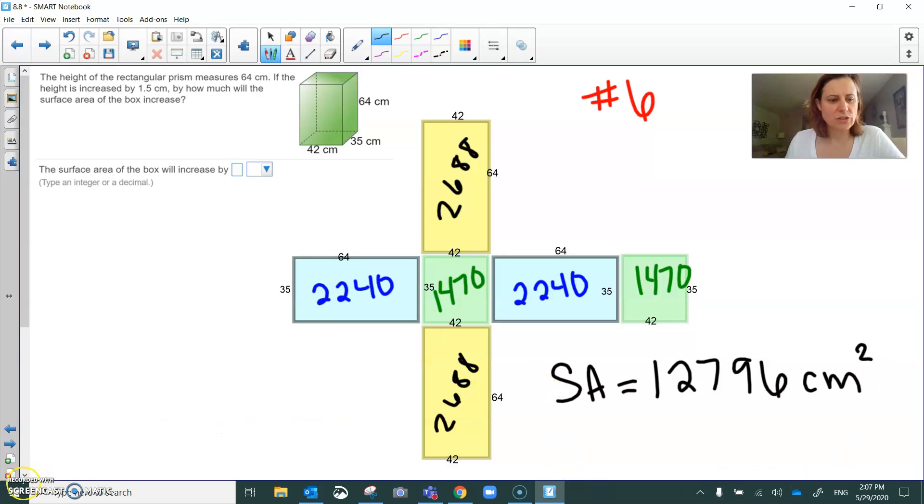So here's what's going to change. If we decide to increase the height by 1.5 centimeters, they told us that the height was the one that was 64. And I know that it goes up and down, but if it had been on its side and it told us the height was 64, that would be this direction.